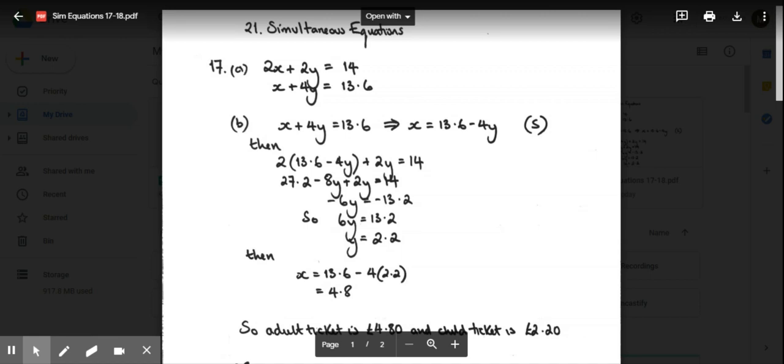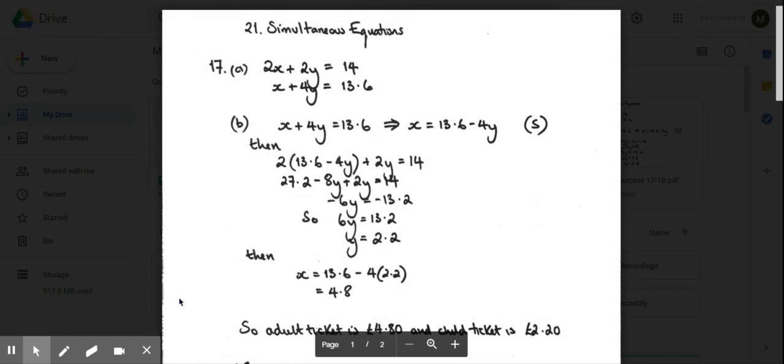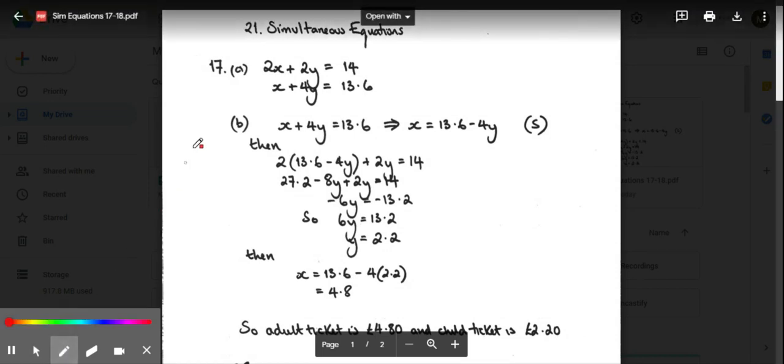You should have read through questions 17 and 18, and I'll try and go through the solutions with you now to help you get a handle on how to do these wordy questions, ones that are based on a real-life context. Question 17 starts by saying you've got adult tickets and child tickets. The adult tickets are represented by x and the child tickets are represented by y.